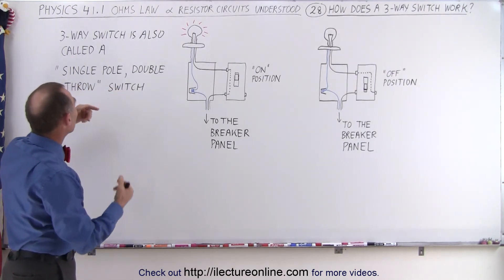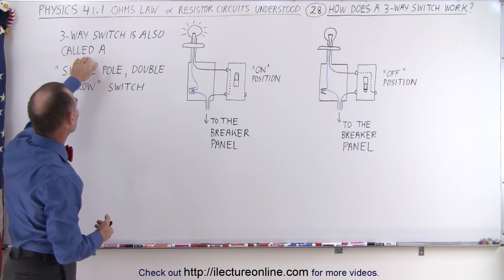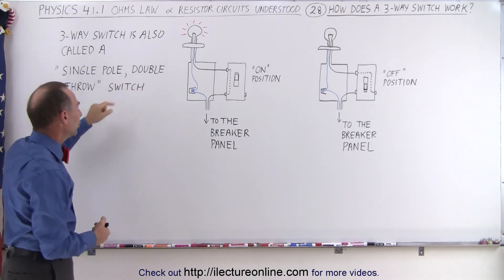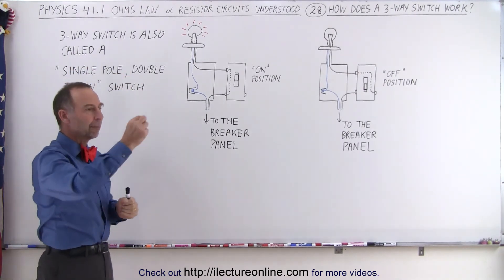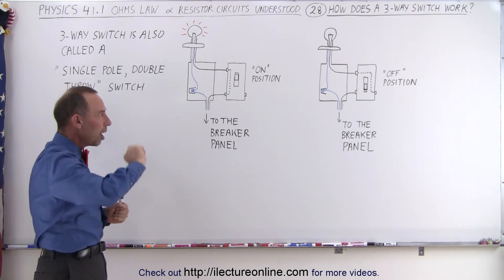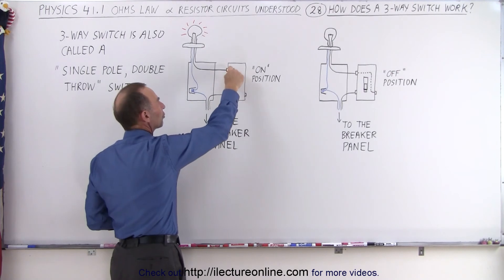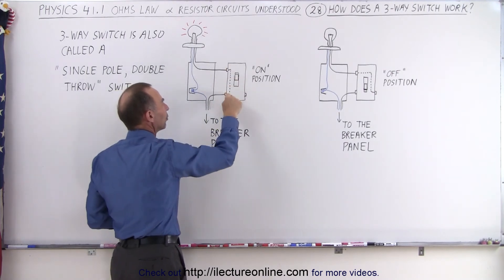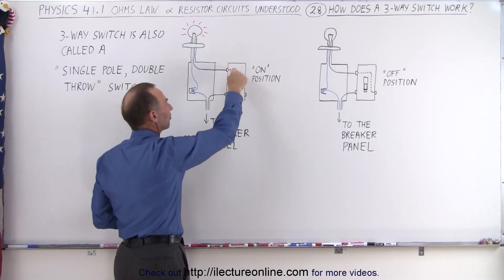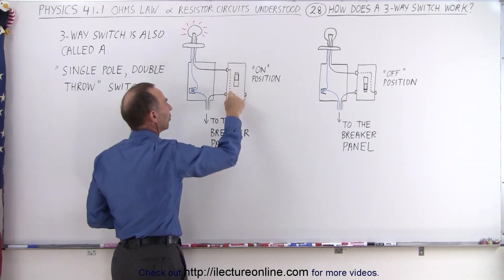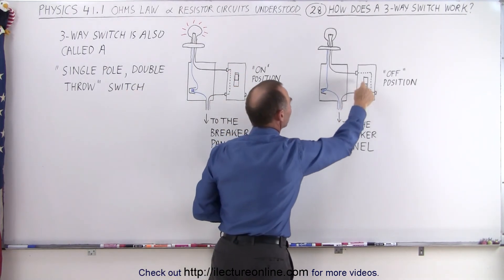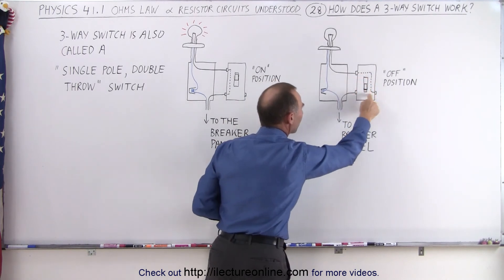But then also you need to realize that the three-way switch is also called a single pole double throw switch. In other words, by changing the lever in the on and in the off position, you can change where the connection goes from the top left, either to the bottom left, or from the top left to the bottom right. So the on position is top left to bottom left, and the off position is top left to bottom right.